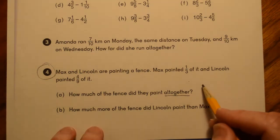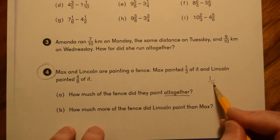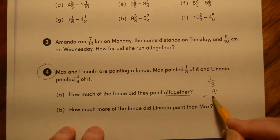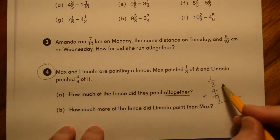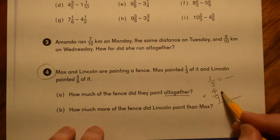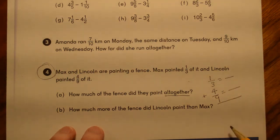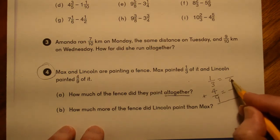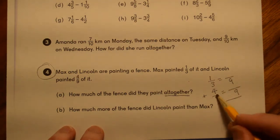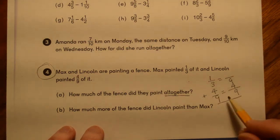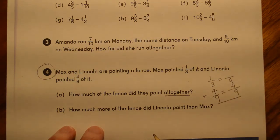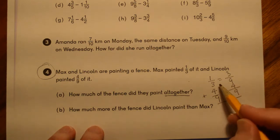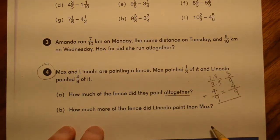So all together, they would have painted one third plus four ninths. Again, in order to add those, I need to find a common denominator. So what would that be? Hopefully you said nine. This numerator, we get to keep the same. This numerator, what does it become?